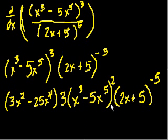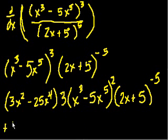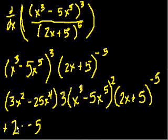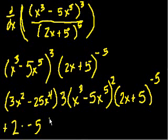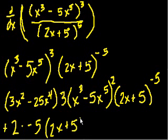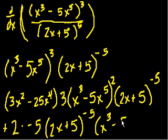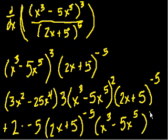Then we add the derivative of the second term. We take the derivative of the inside of 2x plus 5, which is just 2 — since the derivative of 2x is 2 and the derivative of 5 is 0 — times the derivative of the outside, which is minus 5. So it's 2 times minus 5, times 2x plus 5 to the minus 5 power, multiplied by x to the third minus 5x to the fifth to the third power.